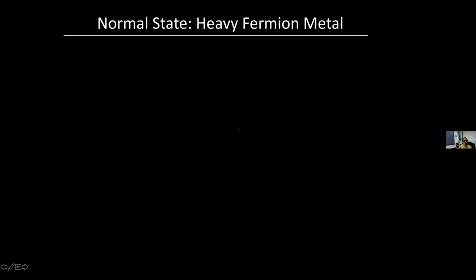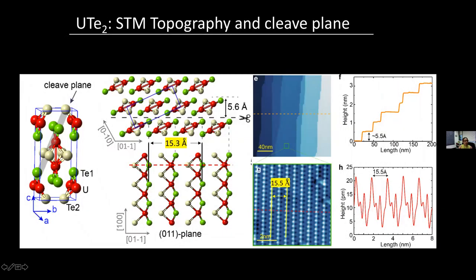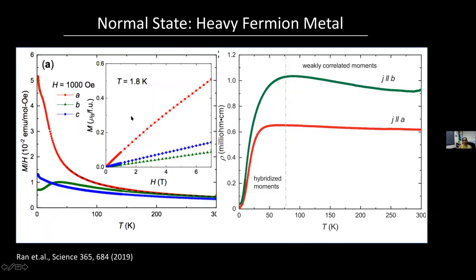One thing worth mentioning: the ARPES data from Andrew's group was not obtained along this plane — they cleave along the C axis and take considerable trouble to cleave along a different plane. Now let's talk about the normal state, because the normal state by itself is extremely interesting.